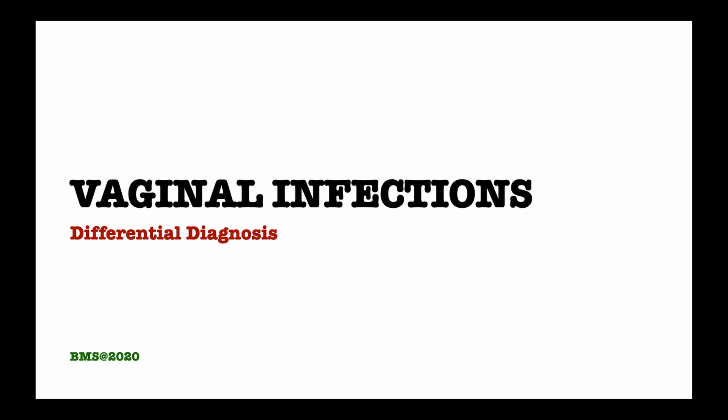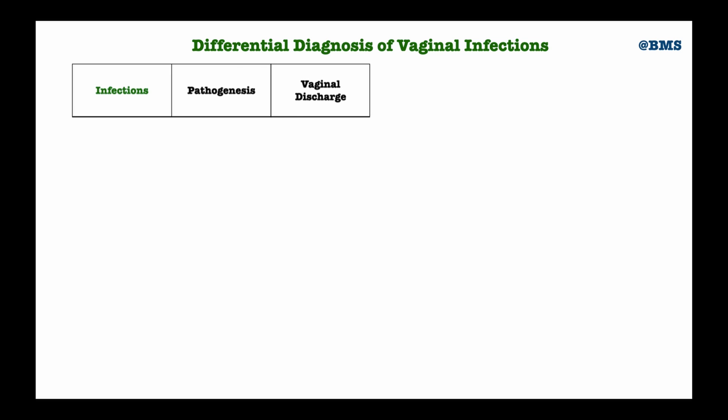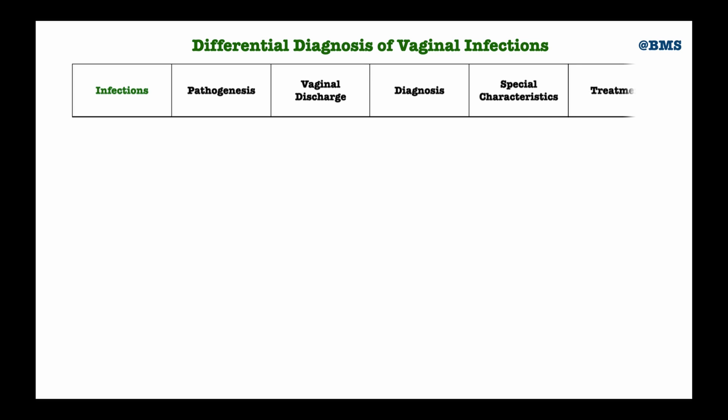In our previous discussions we looked at the vaginal anatomy as well as its physiology, then we've seen most of the infections which may affect the vagina and the cervix. However, most of these infections look similar, so we need to be able to differentiate between them easily. Today we are going to differentiate them based on their pathogenesis, the discharge from the vagina or cervix, how we diagnose them, their special characteristics, and how to treat them.